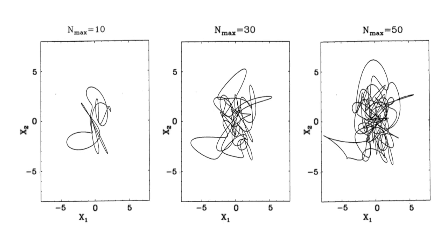As it gets closer and closer to the black hole, it begins to stretch and become more and more complicated. The one on the far right is just before the string lands on the horizon of the black hole. It gets mixed up with a bunch of string on the horizon — what's not shown is a background of string representing the horizon. It falls into this mess so thoroughly that it loses memory of which piece was falling in and which made up the black hole.